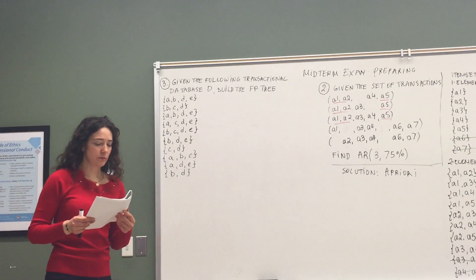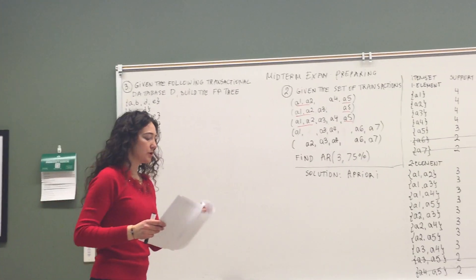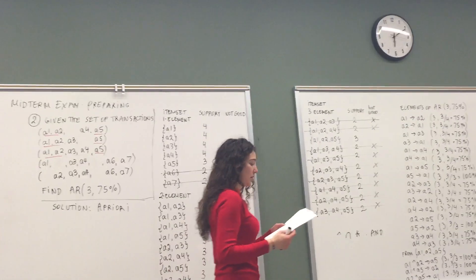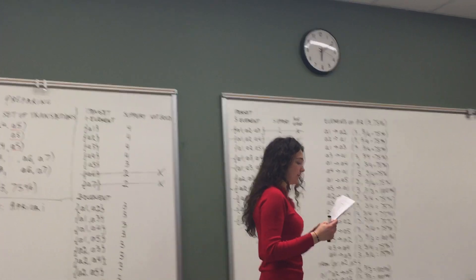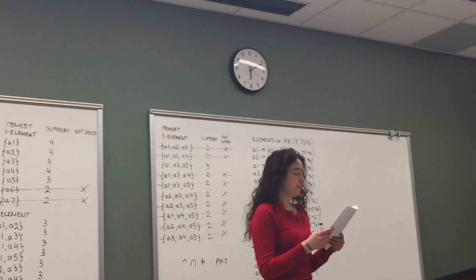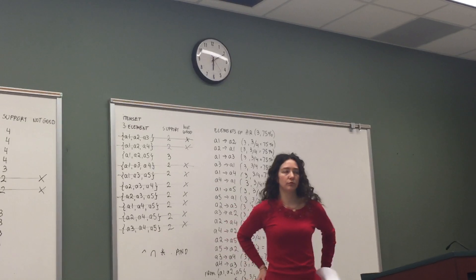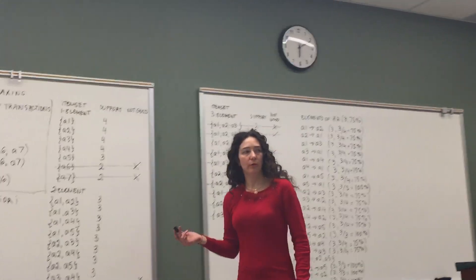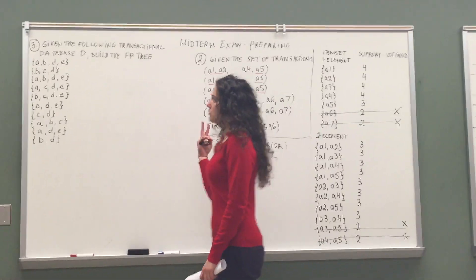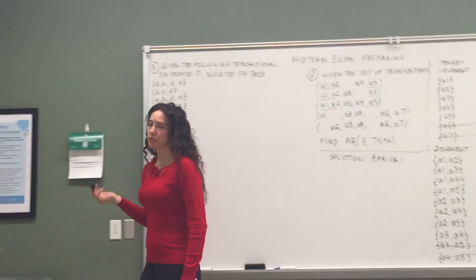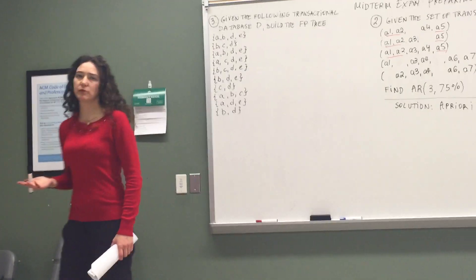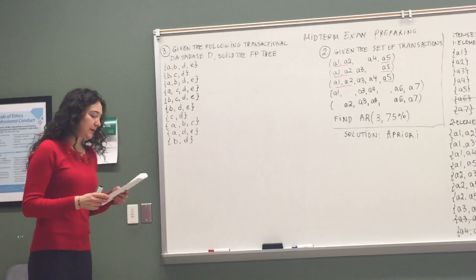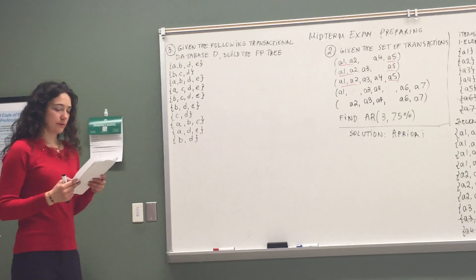The document on the website is going to be updated. The TAs are going to update it because it incorrectly says it's not asking to mine the FP tree. That's not true — you're going to have to do the mining of the FP tree. We have two steps: one is to build the FP tree, and the second is to mine the FP tree. You have to do both on the exam. The TAs will update the document to remove that incorrect note.